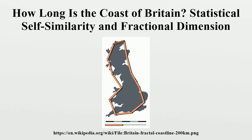Mandelbrot discusses an empirical law discovered by Lewis Fry Richardson, who observed that the measured length L of various geographic borders was a function of the measurement scale G. Collecting data from several different examples, Richardson conjectured that L could be closely approximated by a function of the form where M is a positive constant and D is a constant called the dimension, greater than or equal to one.